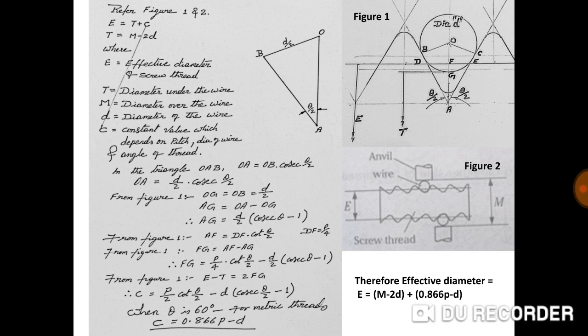Therefore C equals 2 × [(P/4) × cot(theta/2) minus (D/2) × (cosec(theta/2) − 1)], which simplifies to (P/2) × cot(theta/2) minus D × (cosec(theta/2) − 1). When theta is 60 degrees for metric threads, E minus T equals 0.866P minus D.